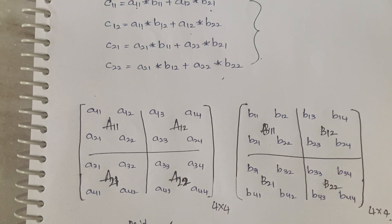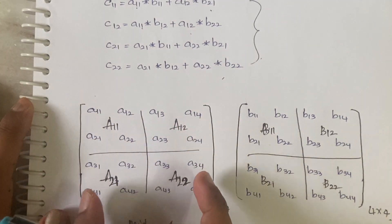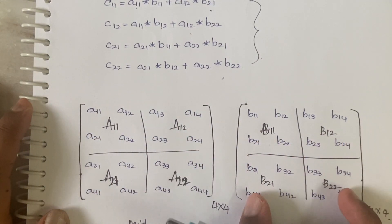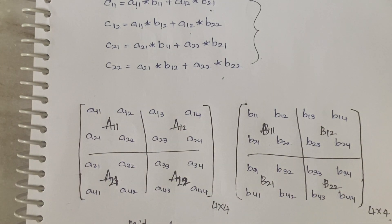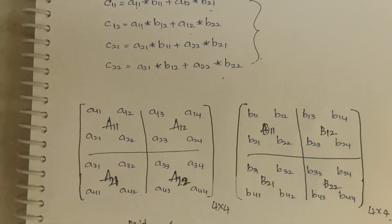Now A11, A12, A21, A22 and B11, B12, B21, B22 are like 2x2 matrices. You will directly multiply them by treating them as 2x2 matrices. For this we also have an algorithm — let me show you that algorithm.